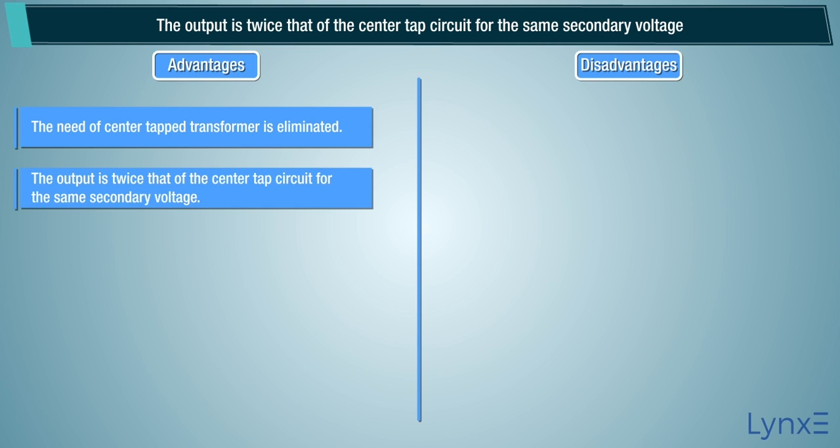The output is twice that of the center tap circuit for the same secondary voltage.